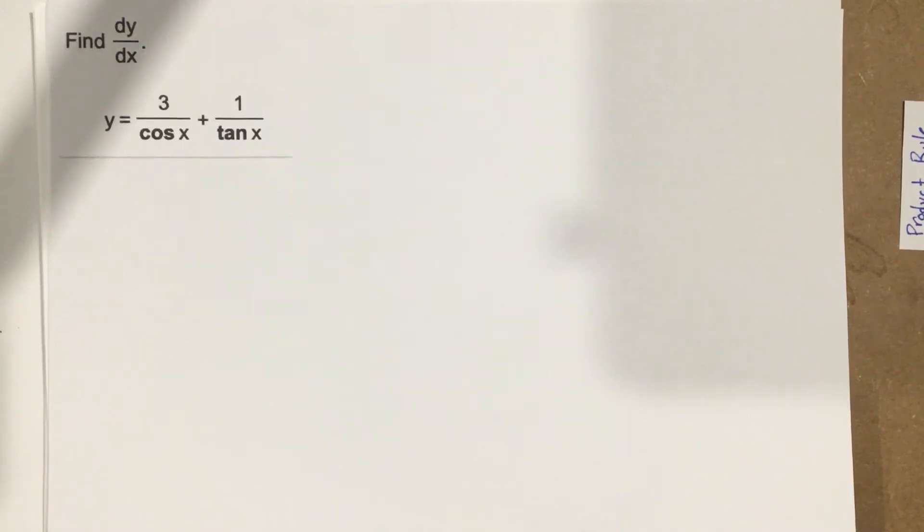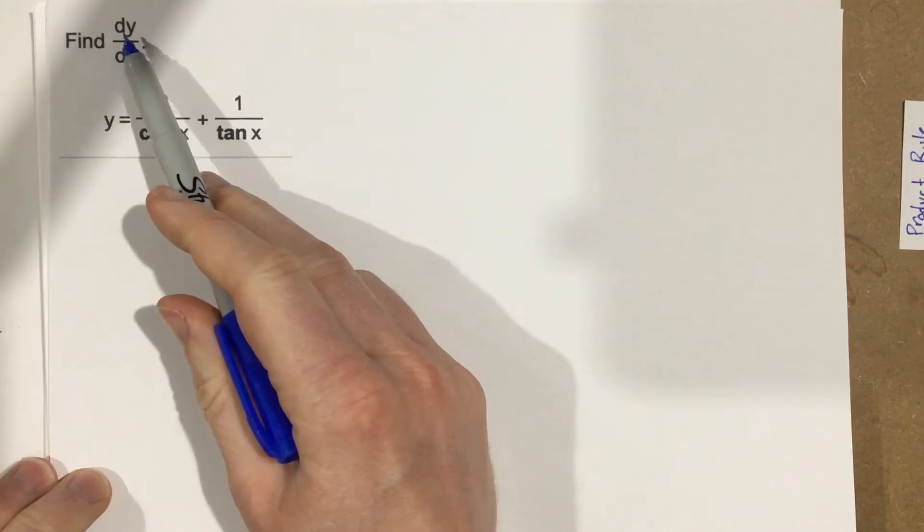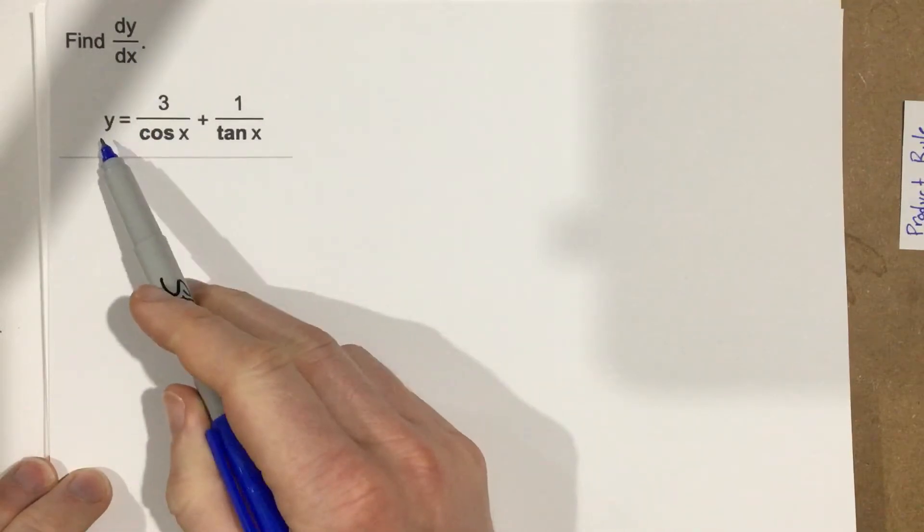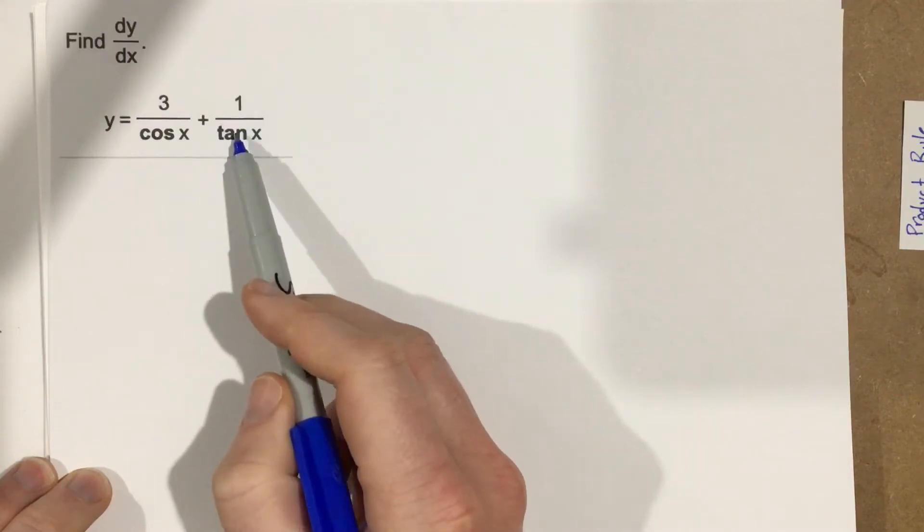This is problem number 6 from section 3.5, and this problem says find the derivative of y with respect to x, where y equals 3 over cosine x plus 1 over tan x.